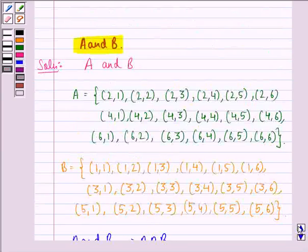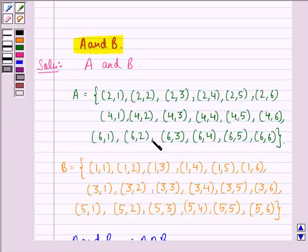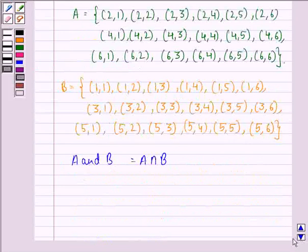Now we see that in the sample space A and sample space B none of the sample points are the same. No sample point is common. Therefore we can say that A intersection B is equal to phi.